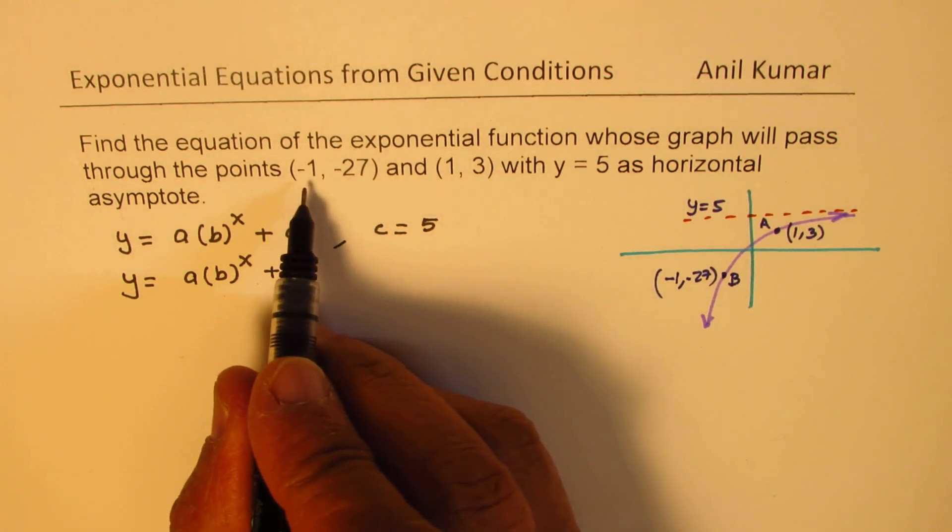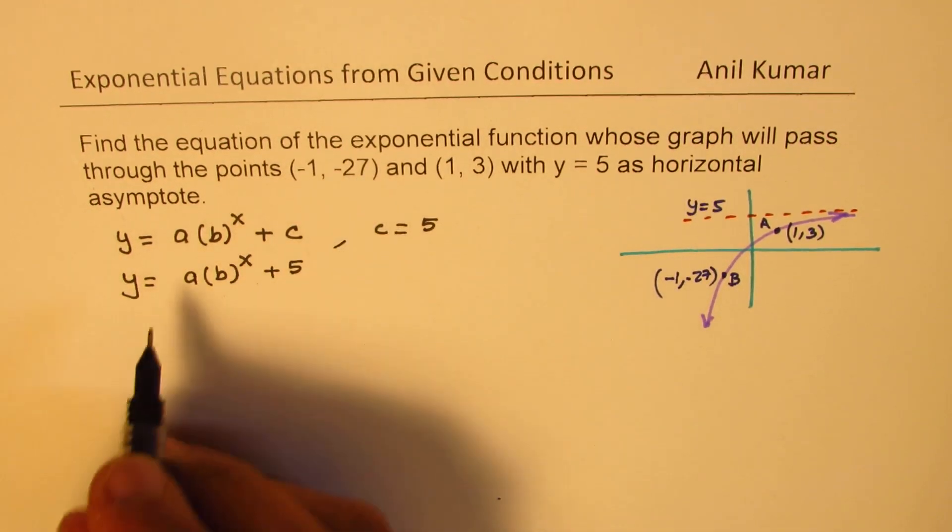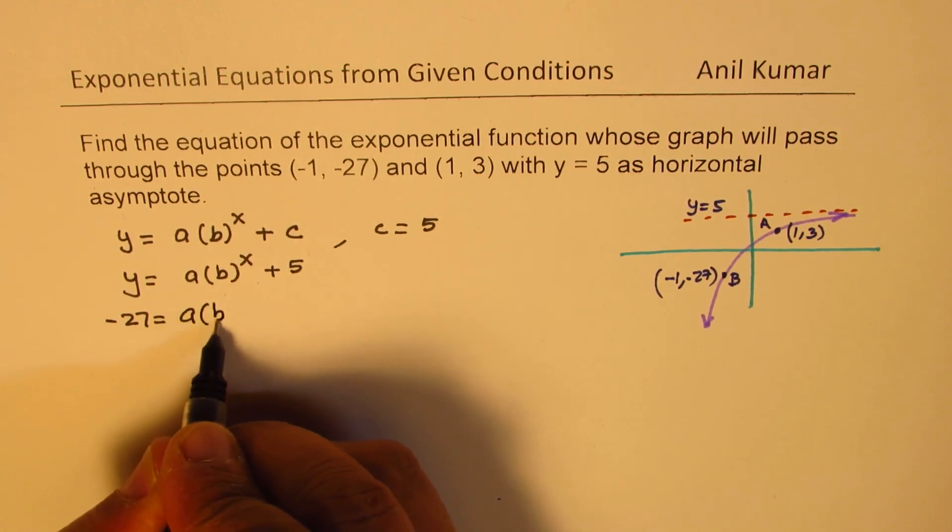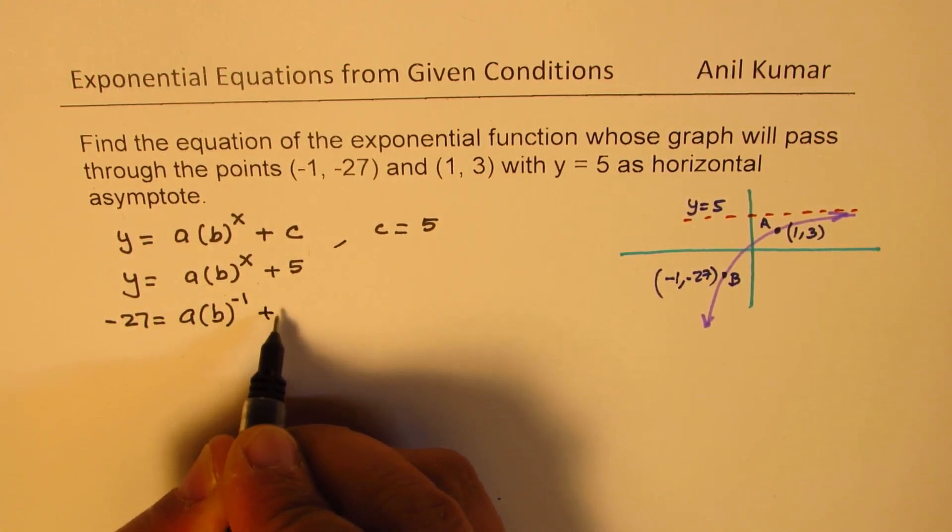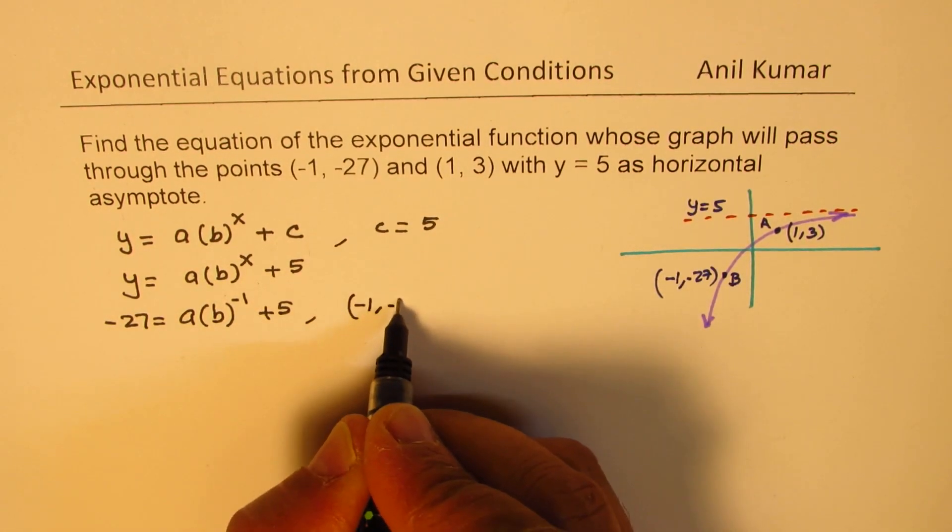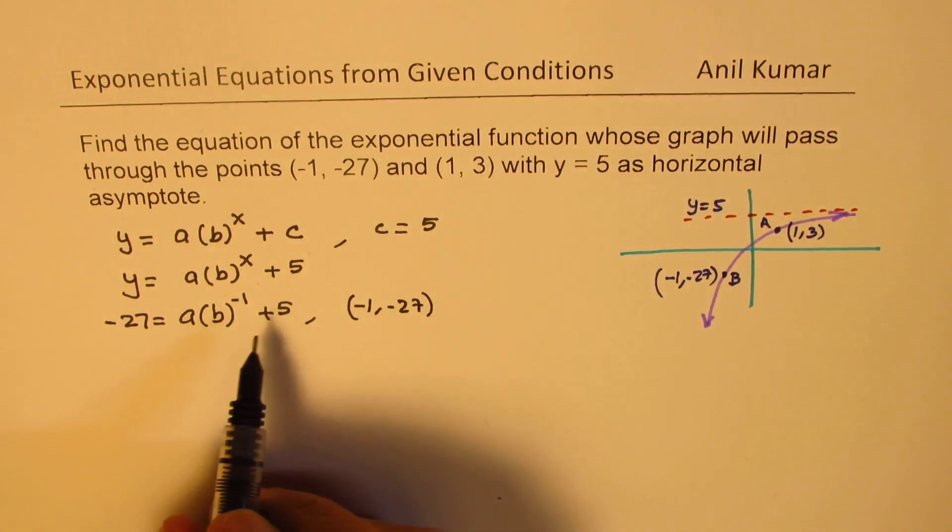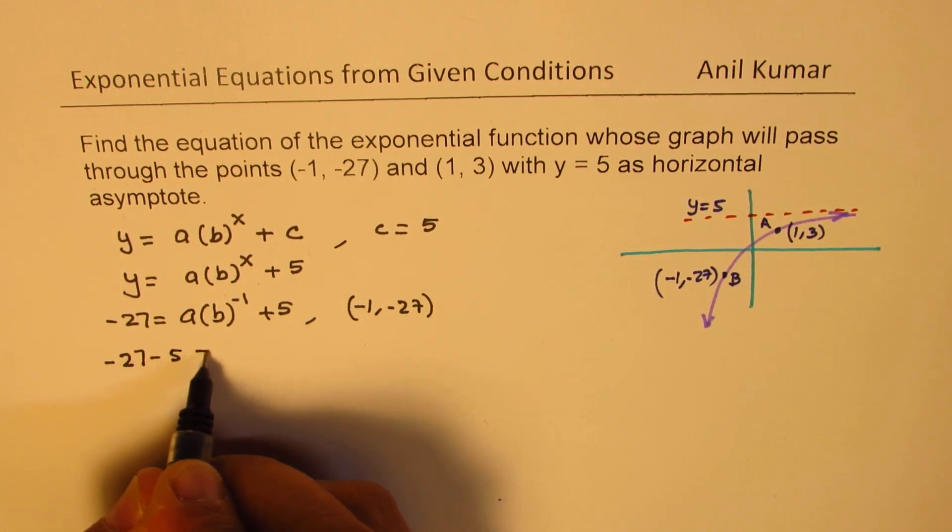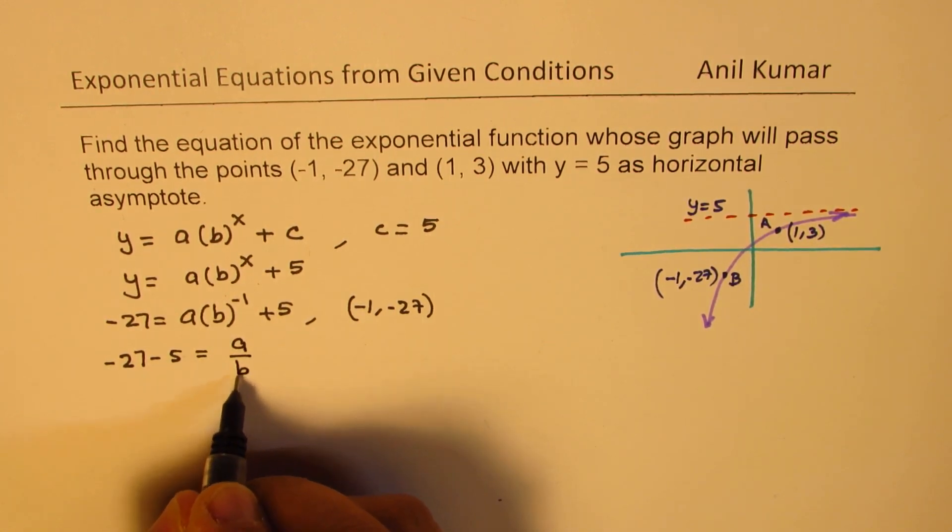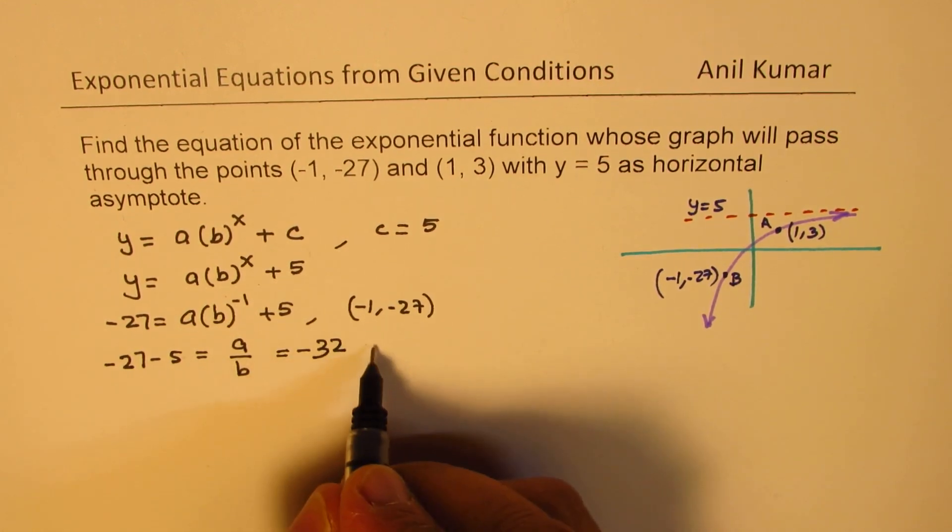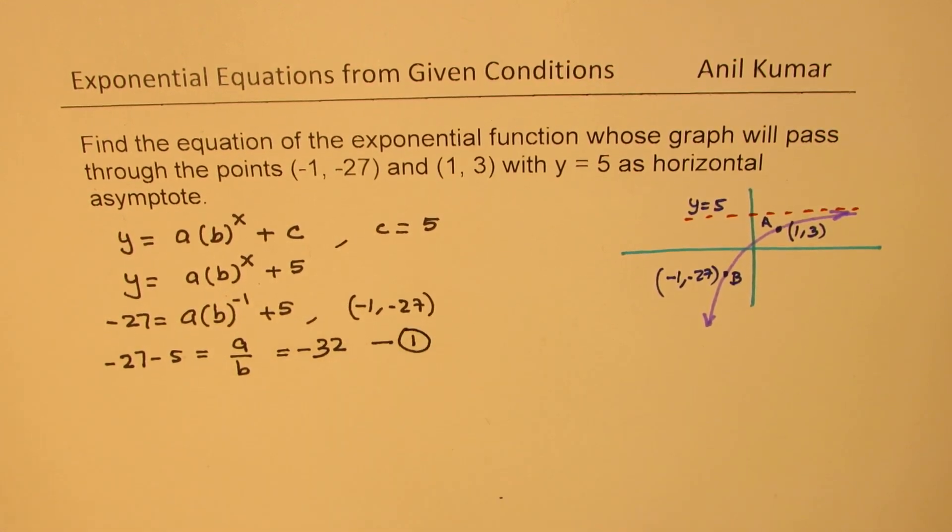Using the point (-1, -27), we get -27 = a(b)^(-1) + 5. So this goes through the point (-1, -27). If you simplify this, bringing 5 to the other side, we get -27 - 5 = a/b, so a/b = -32. Let's call this our equation number 1.